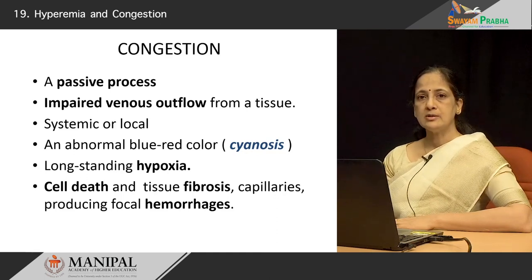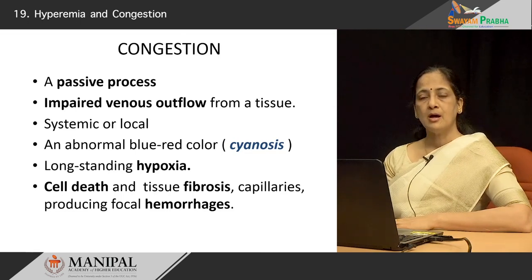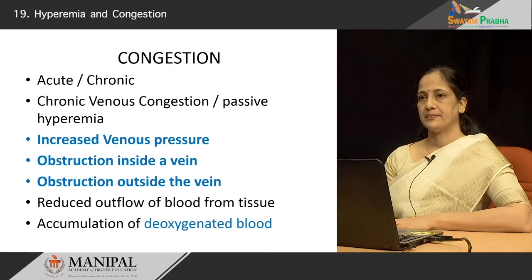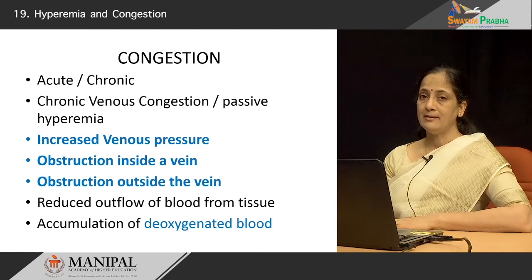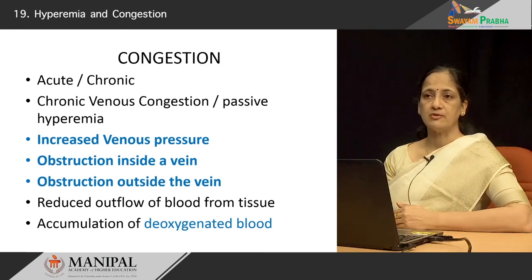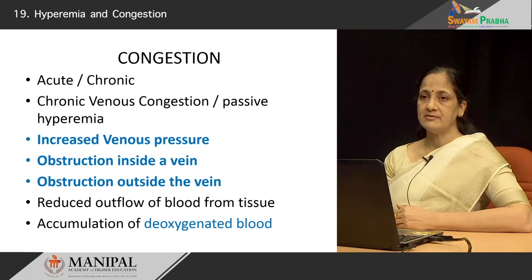Here there is long-standing hypoxia, and this may result in cell death, cell injury, and fibrosis. Further, the buildup of pressure within the blood on the venous side of the circulation causes focal hemorrhage in the tissue and subsequent changes. Congestion can be acute if there is sudden obstruction to the venous outflow, or it can be chronic when, for example, the cardiovascular system is responsible for the congestion. We also use other synonyms like chronic venous congestion, and sometimes congestion is also referred to as passive hyperemia.